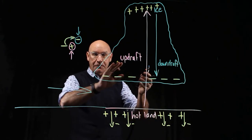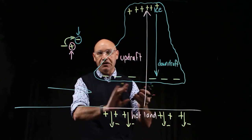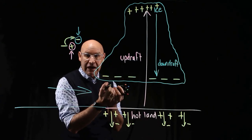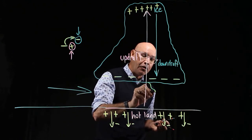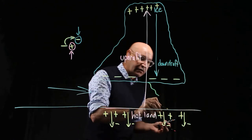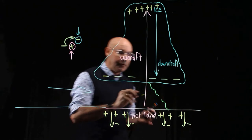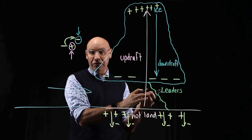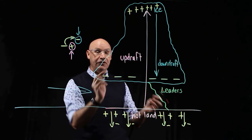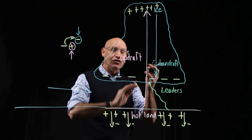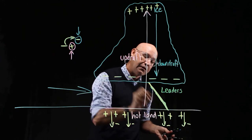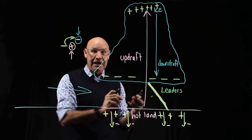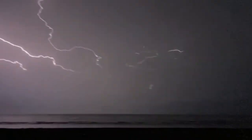Lightning can't just jump from the bottom of the cloud to the ground because there's too much resistance to the flow of electricity in the air. But when there is a large charge separation, highly charged channels of air reach down from the bottom of the cloud and reach up from the ground. These are called leaders. And when these leaders meet, the circuit is closed and the resistance to the flow of electricity is reduced. So then we have a massive rapid flow of electricity from the cloud to the ground — electrons running from the cloud to the ground — and this superheats the air, creating the flash of lightning and the crash of thunder.